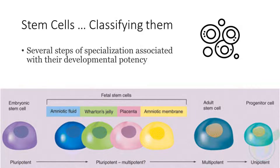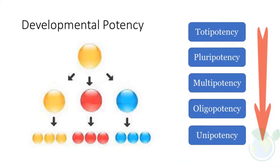Stem cells are defined by their capabilities to self-renew and give rise to various types of differentiated cells depending on their potency. They are classified as pluripotent, multipotent, and unipotent as demonstrated through their potential to generate the variety of cell lineages. Developmental potency is reduced with each step, which means that a unipotent stem cell is not able to differentiate into as many types of cells as a pluripotent one.